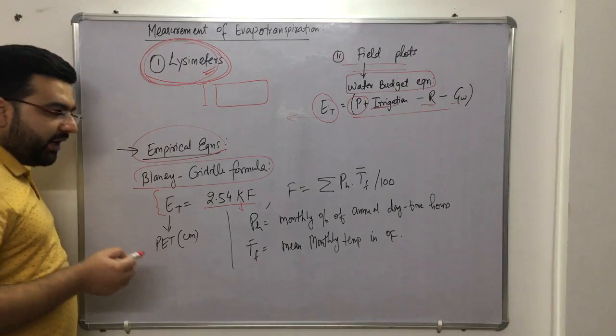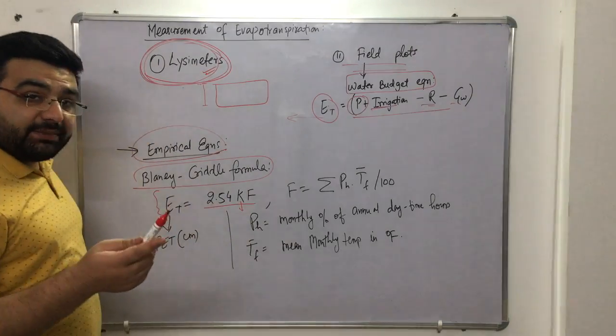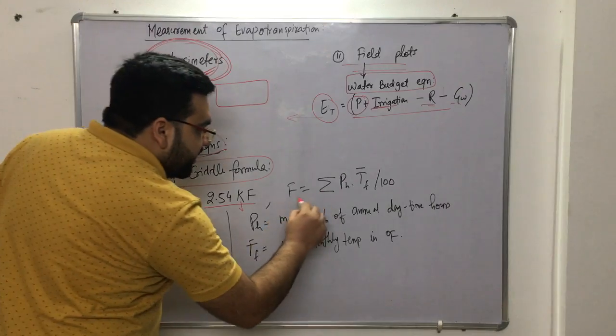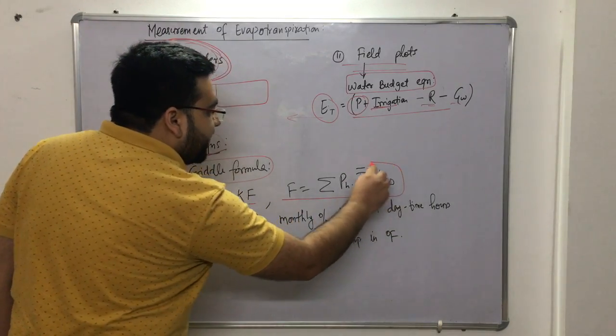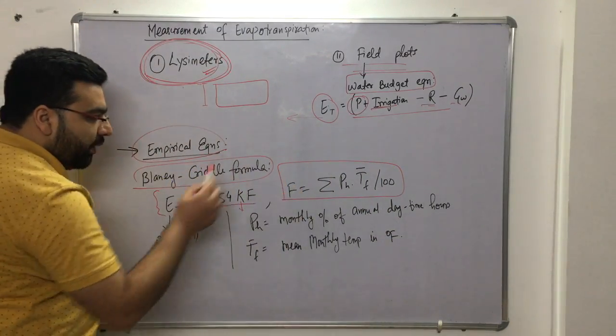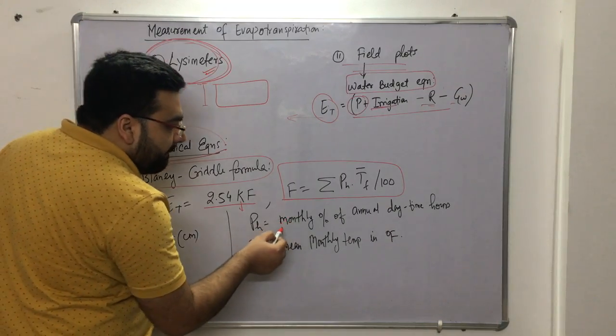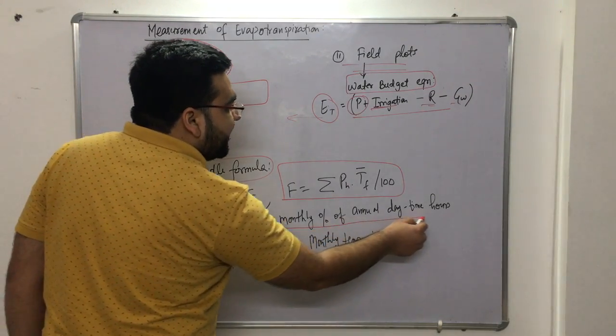K is a constant, and F is the evapotranspiration factor. F is given by summation of (p × Tf) / 100. What is p? p is the monthly percentage of annual daytime hours.